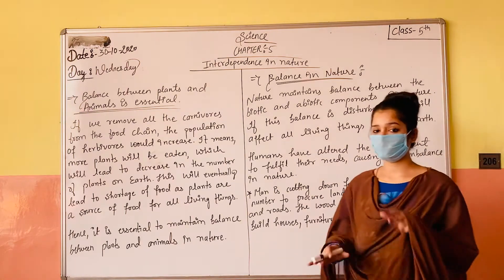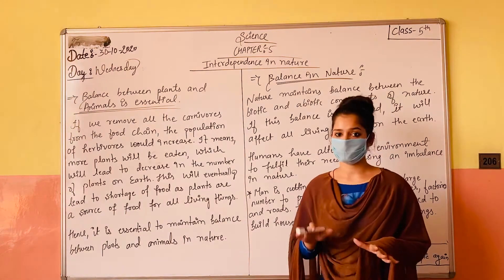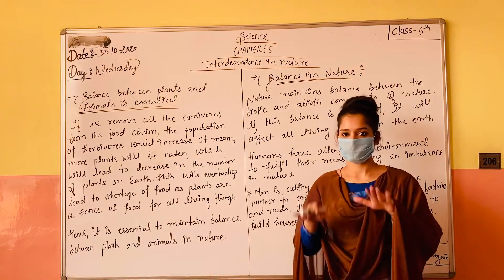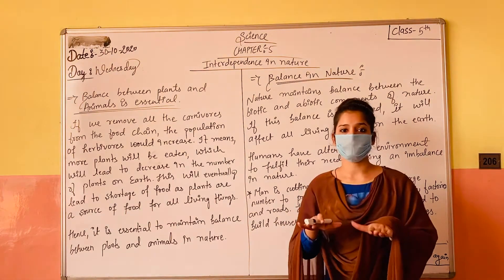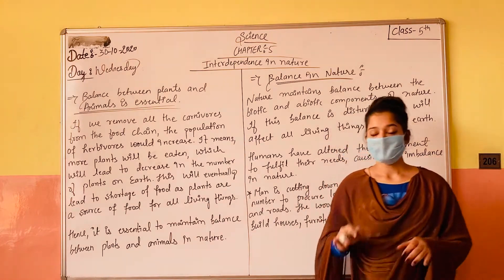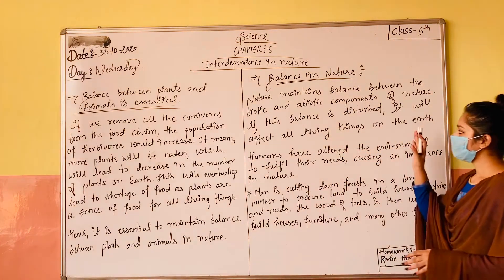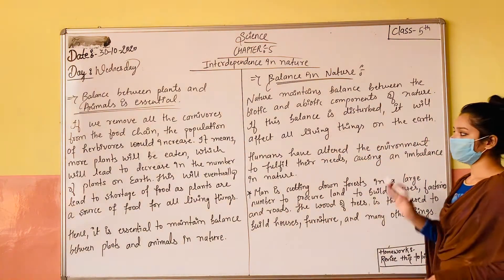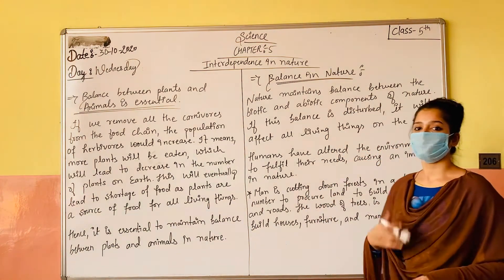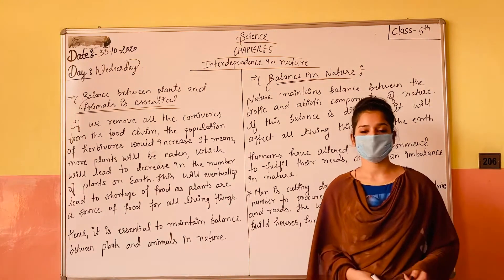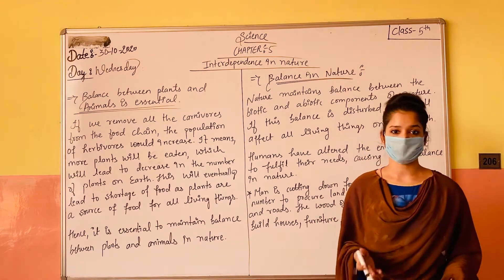If this balance is disturbed, it will affect all living things on the Earth. Agar yeh balance bigad jaayega — agar dono ka balance oopar-neeche ho gaya — toh uske kya hoga? Hamaari prithvi pe kaafi saari cheezein affect karengi, bahut saari problems aayen gi, bahut saare issues aayen ge.